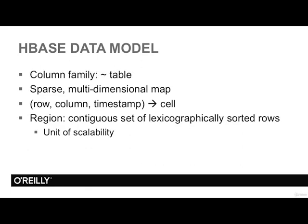Let's see the HBase data model. We have the concept of a column family, which is close to a table in a relational database. The data structure is a sparse, multidimensional map. The model uses a triple of row and column — think of those as coordinates — and in addition, there is a timestamp. This is called a cell, and the timestamp gives us the possibility to run queries asking how the data looked at a particular point in time. Then we have regions, which are contiguous sets of lexicographically sorted rows, representing a unit of scalability in the system.